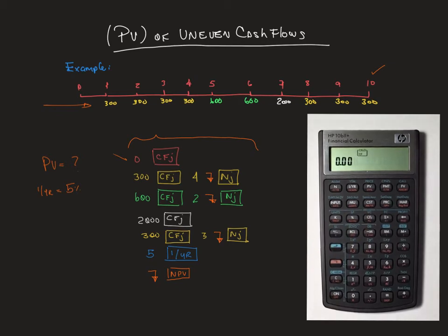Then we are going to introduce the first cash flow which is zero CFG. The second cash flow is going to be the 300 and it's four years so we need to hit four, SHIFT and N/G.